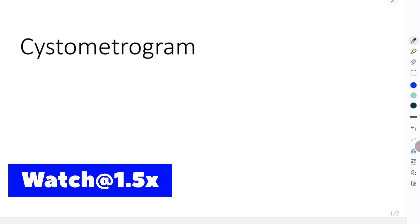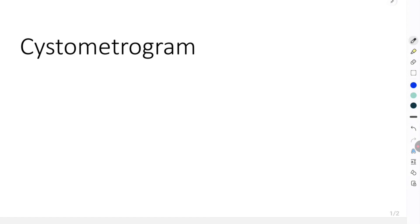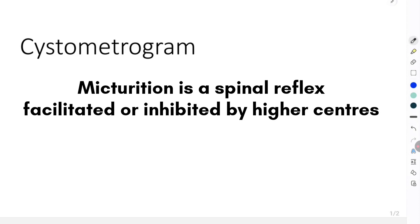In this video let's learn regarding cystometrogram. It is related to micturition. As we have already studied in the video on micturition reflex, micturition is a spinal reflex which is either facilitated or inhibited by the higher centers present in the cerebral cortex and the pons.